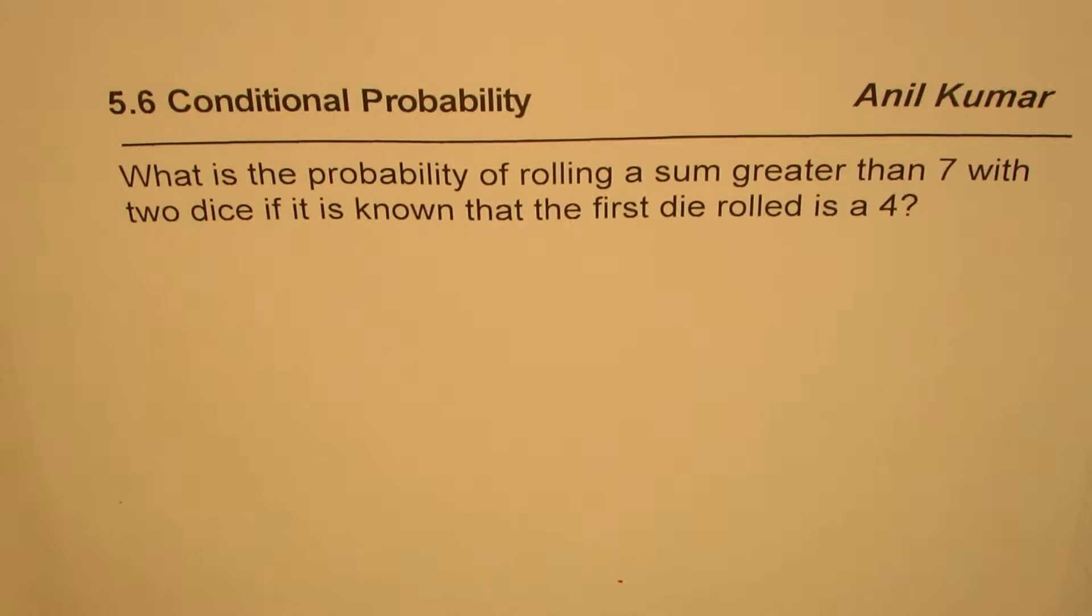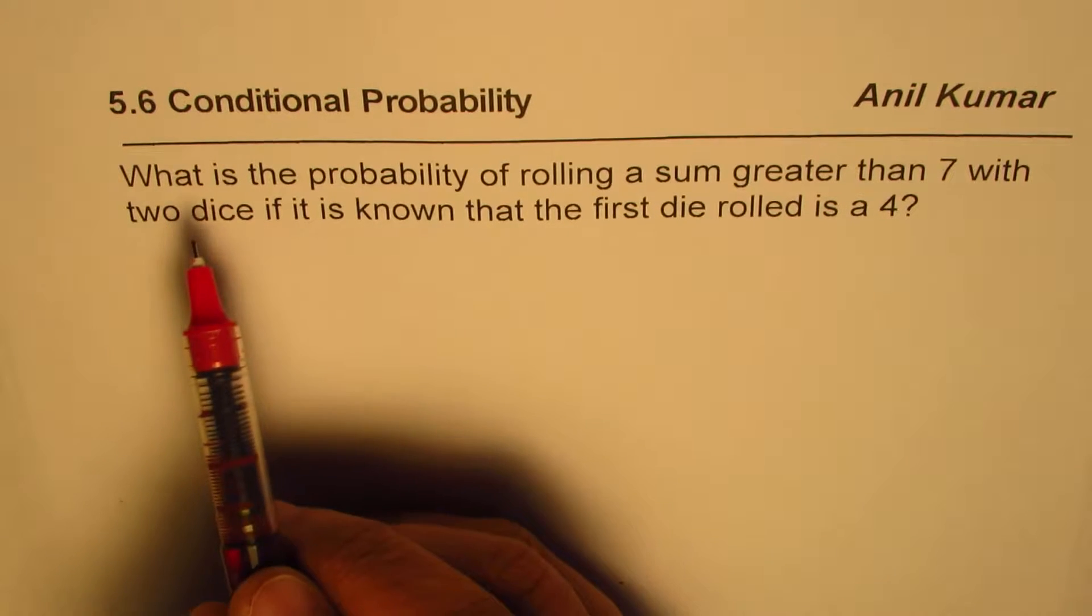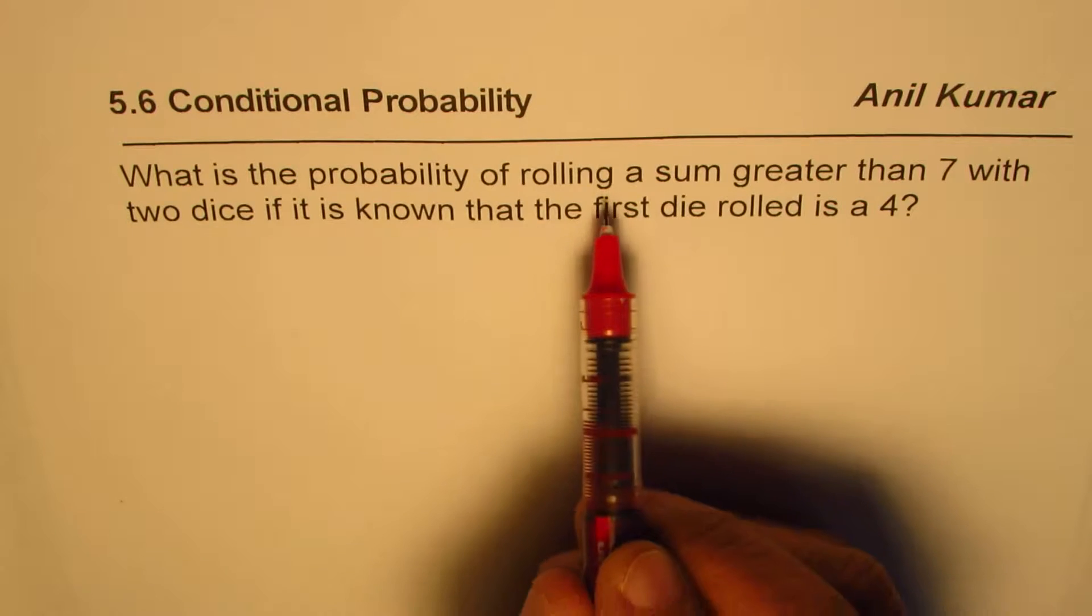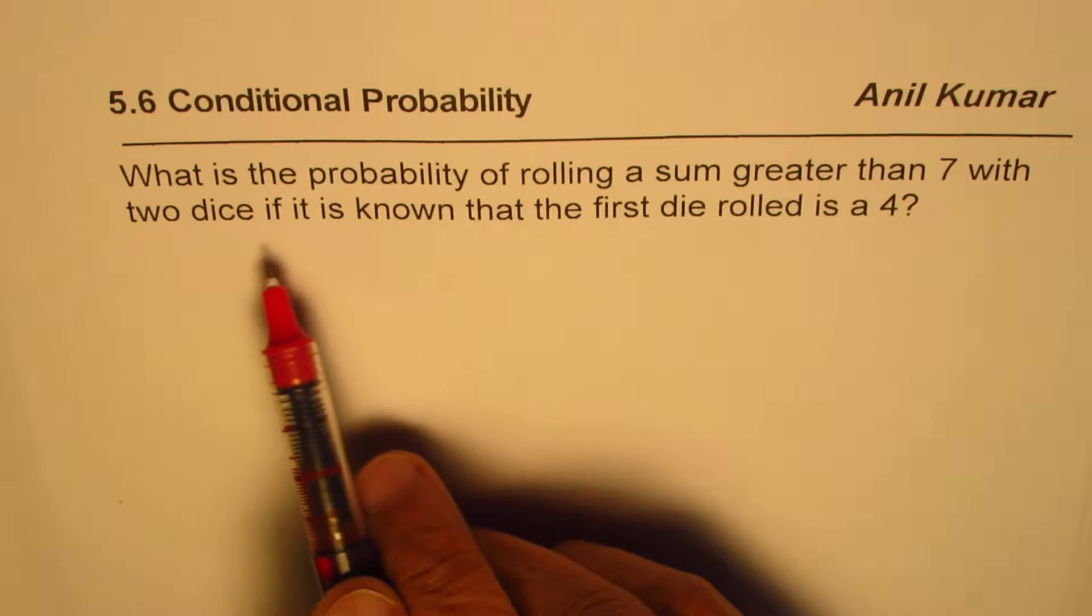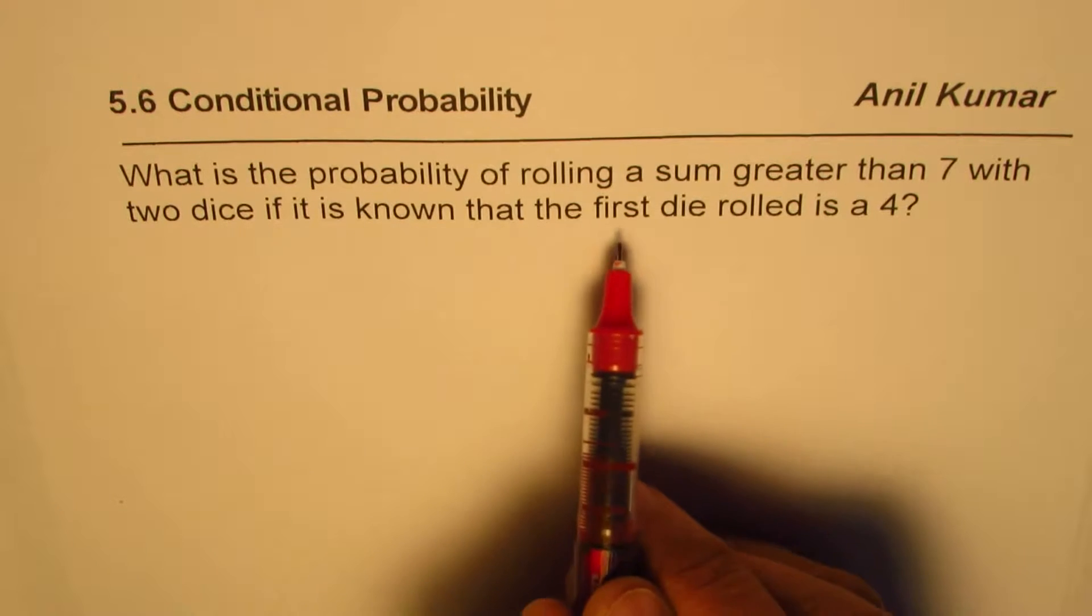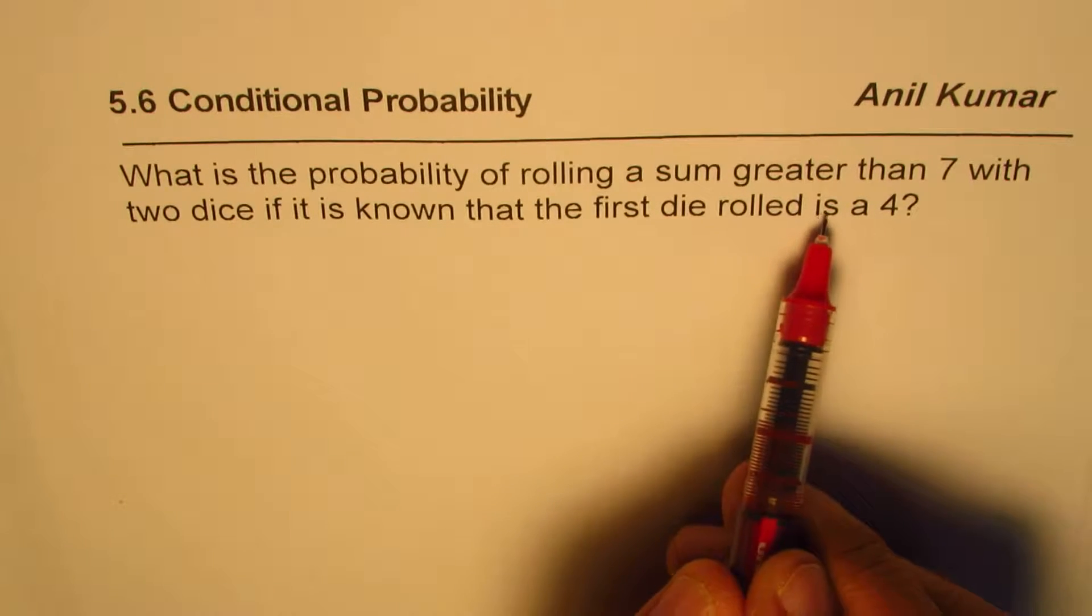I am Anil Kumar. We will discuss how to find conditional probability in this particular video. The example is, what is the probability of rolling a sum greater than 7 with two dice if it is known that the first die rolled is a 4?